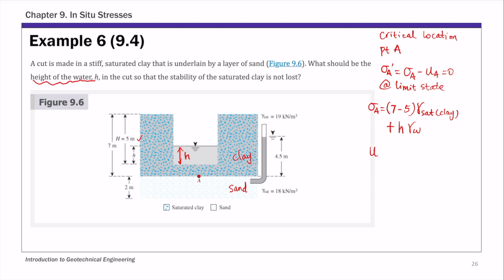The pore pressure at A: we're given a piezometer or standpipe reading of 4.5 meters of water column. So that's 4.5 times the unit weight of water. That is the pore pressure at point A. Substituting total stress and pore pressure into sigma A prime, we have: (7 minus 5) times gamma saturated clay of 19, plus h times gamma water of 9.81 SI units, minus 4.5 times 9.81 for the pore pressure at A.